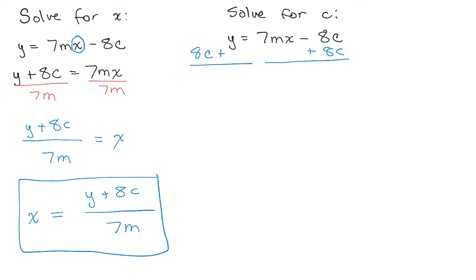And it'll be on the left side of the equation. I won't have to do this extra step I did over here on the left rewriting it. So I have 8c plus y equals 7mx. All right. So now what I'm going to do is I want to isolate the term that has c, which is the 8c. So I need to subtract y from both sides.